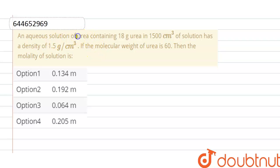An aqueous solution of urea containing 18 gram urea in 1500 centimeter cube of solution has a density of 1.5. If the molecular weight of urea is 60, then the molality of solution is. So here we have to find out the molality.